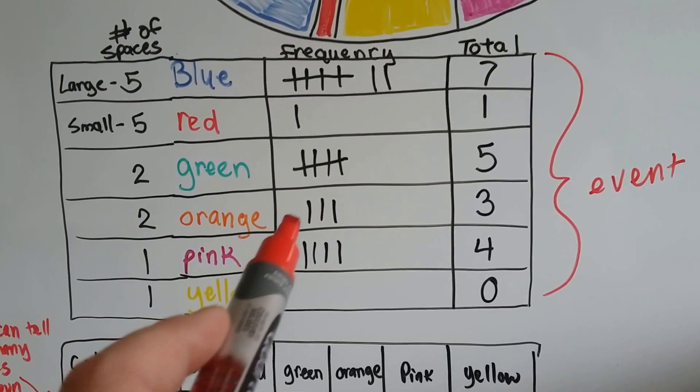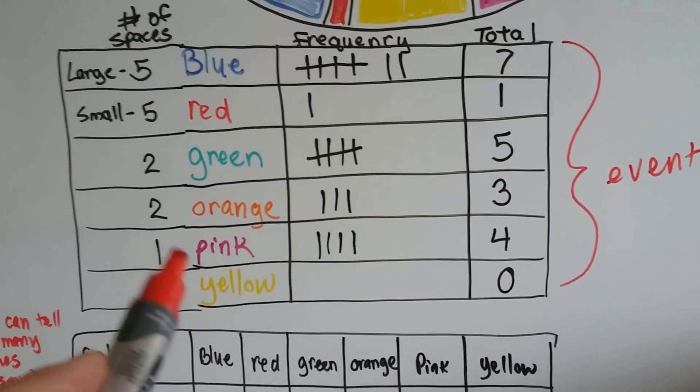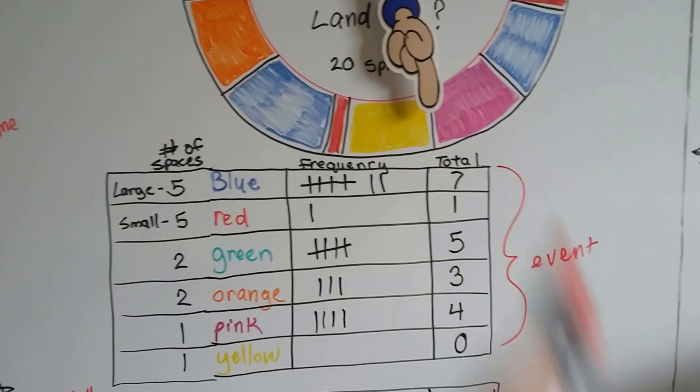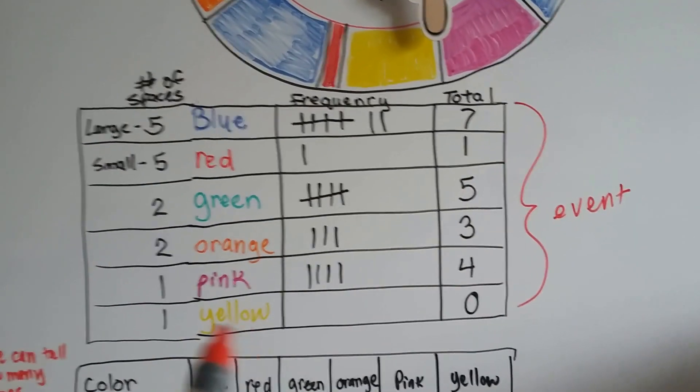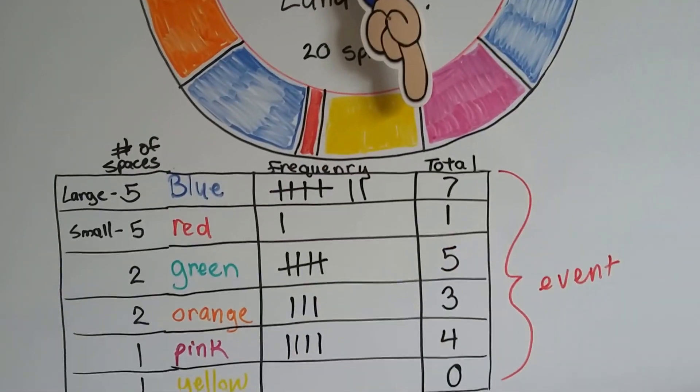There's only two orange ones, and it landed on it three times. There's only one pink one. Look at this. And it landed on that pink one four times. It didn't land on the yellow one at all. There was only one yellow.